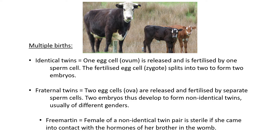Sometimes, especially in cows, we can have multiple births such as twins, though it's not very normal and can cause complications. With identical twins, one egg cell is released and fertilized by one sperm cell — normal fertilization — but then that zygote splits into two somewhere between being a zygote and a blastocyst. You get two embryos with the same DNA.